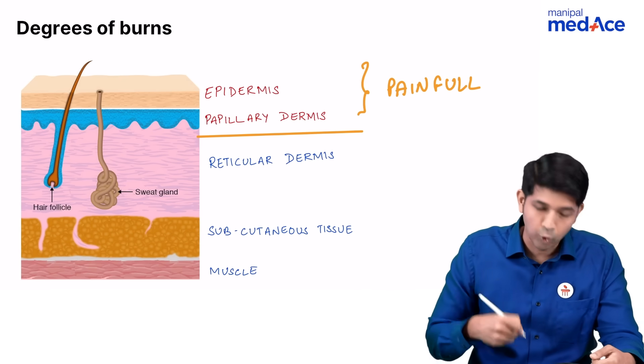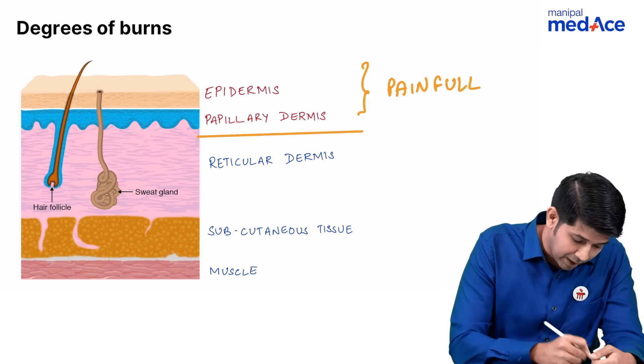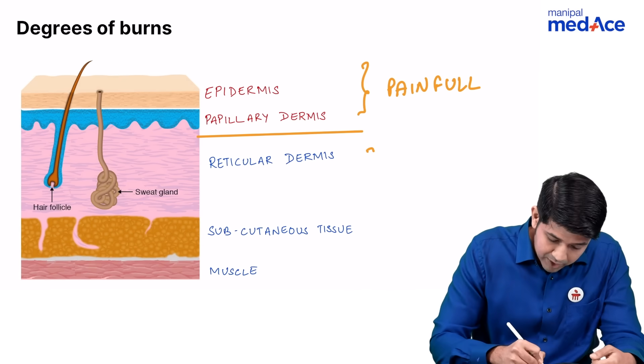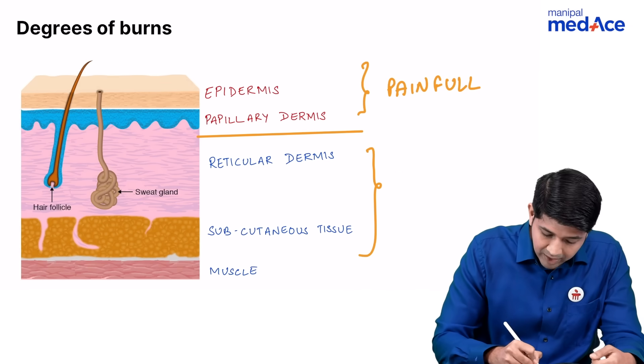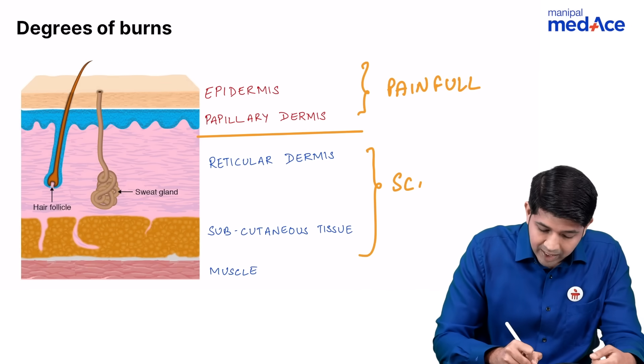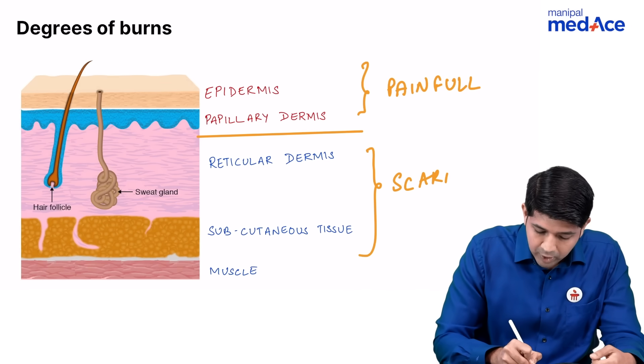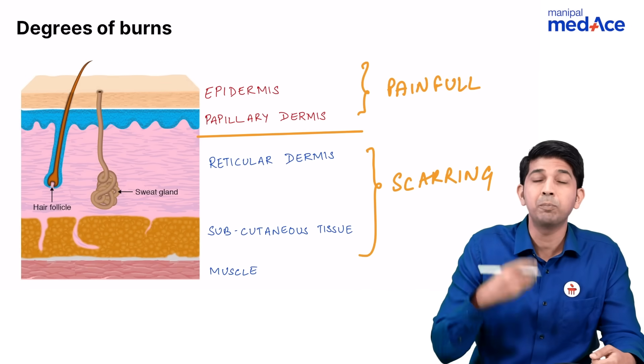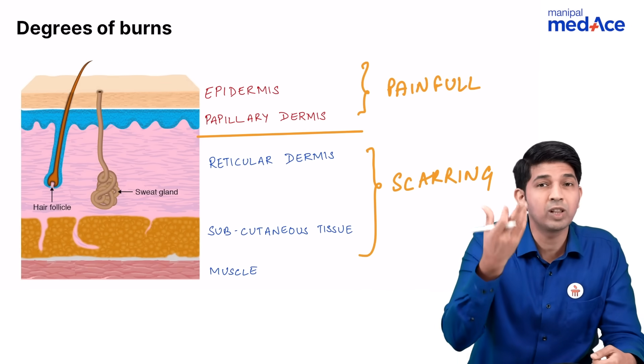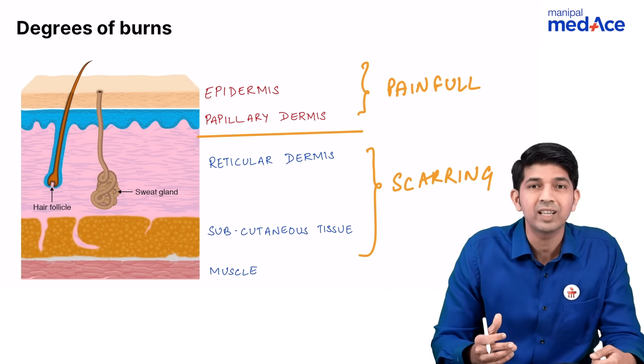And you can see that there is an alphabet S in the lower half. That means burns which involve these three layers heal with the presence of scarring, while burns which involve the upper two layers heal without scarring.